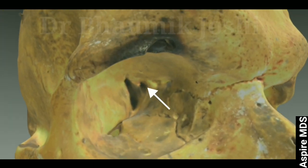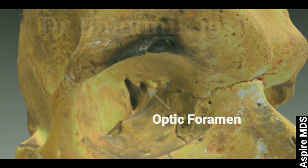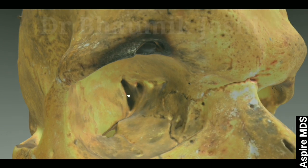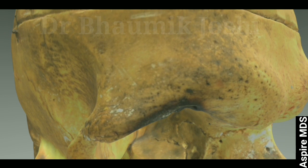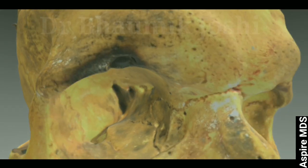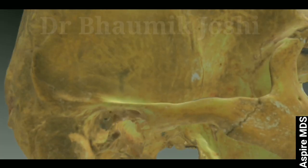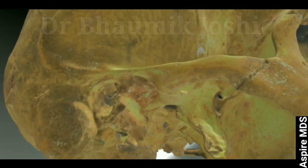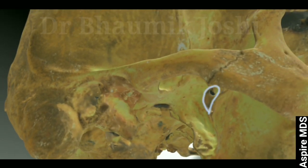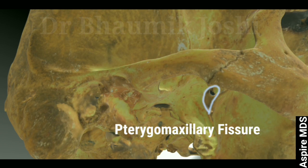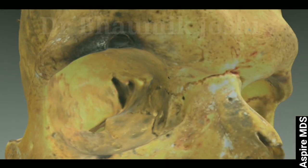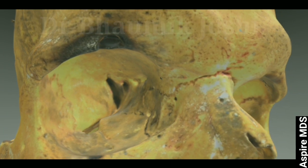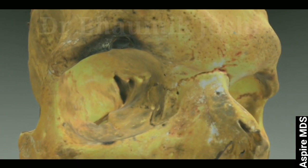The foramen we see here is the optic foramen. Lateral to it is the superior orbital fissure, and the other one is the inferior orbital fissure. The teardrop-shaped fissure is known as the pterygomaxillary fissure, present between the maxilla and the pterygoid plate of the sphenoid. These are the structures of importance when discussing LeFort III fracture.